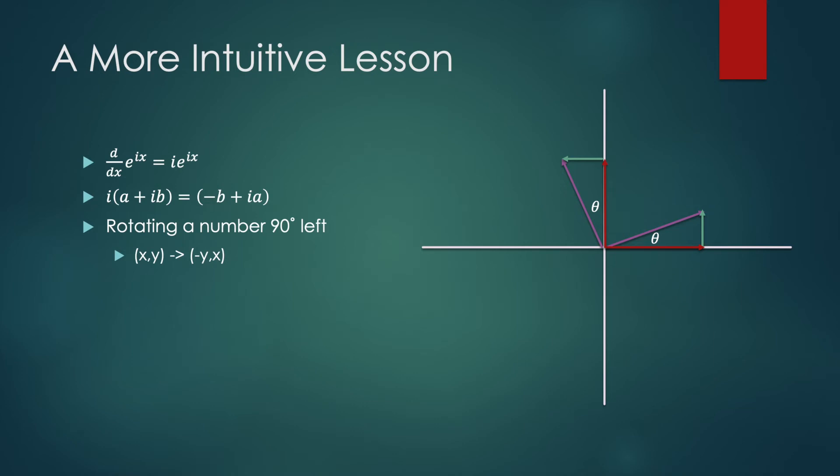The purple vector, initially making an angle θ with the x axis, once you rotate it 90 degrees to the left, the height of the purple vector becomes the horizontal distance multiplied by minus one, and the horizontal distance of the original vector becomes the height of the new vector.